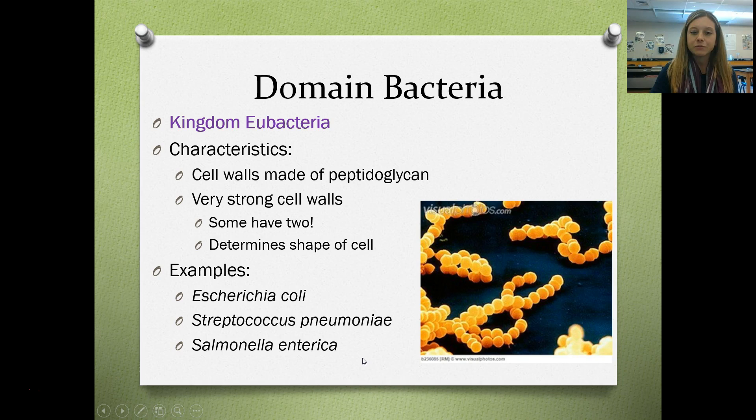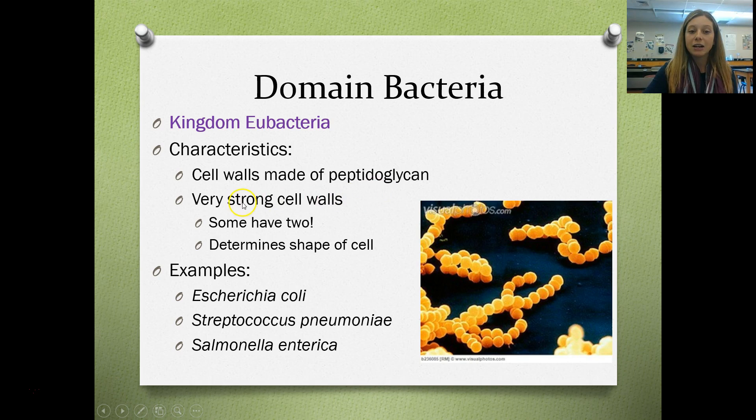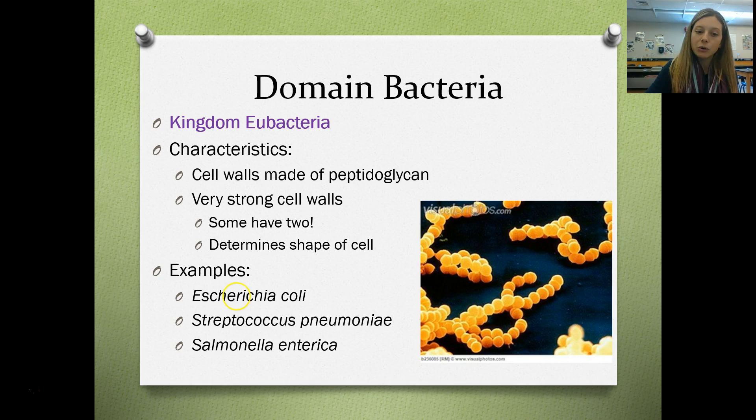Moving on to the domain Bacteria, we have the kingdom eubacteria — when you think of bacteria, you think of the bacteria belonging to this kingdom. They have cell walls made of a substance called peptidoglycan, which gives them very strong cell walls. Some even have two layers of cell walls, and this ultimately determines the shape of the cell. Examples include E. coli, the bacteria that causes strep throat, and the bacteria that causes salmonella — your modern day bacteria that belong to this kingdom.